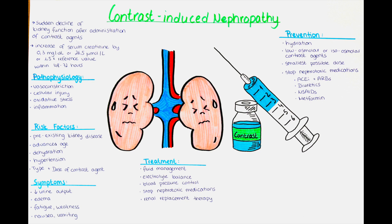Contrast-induced nephropathy can cause fluid to accumulate in the body, leading to swelling of the legs, ankles or other areas — known as edema. Kidney dysfunction can result in build-up of waste products and toxins in the bloodstream, leading to fatigue, weakness and a general feeling of being unwell. Some patients may also experience nausea, vomiting or loss of appetite. Severe cases can result in fluid overload and congestion in the lungs, leading to difficulty breathing or shortness of breath.